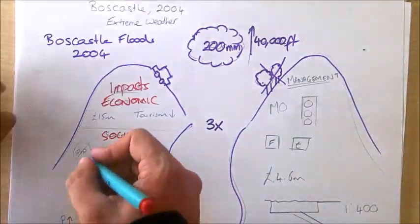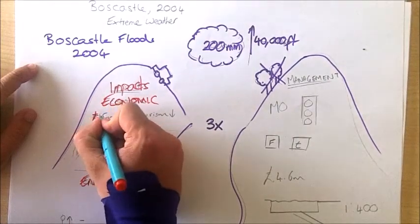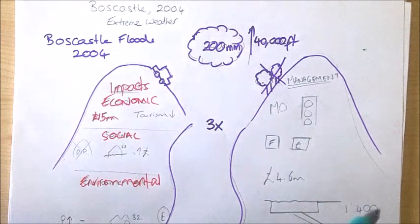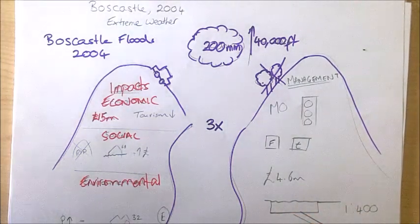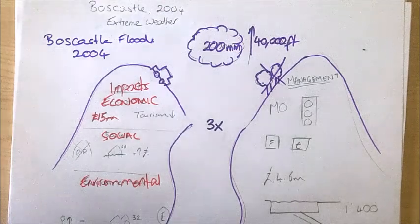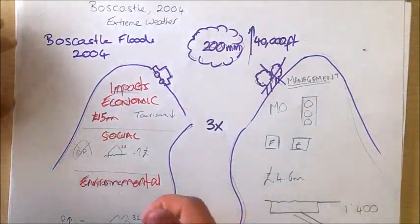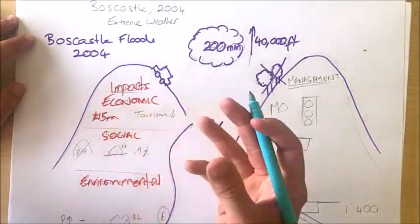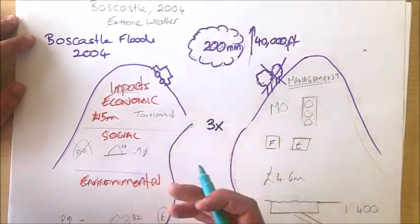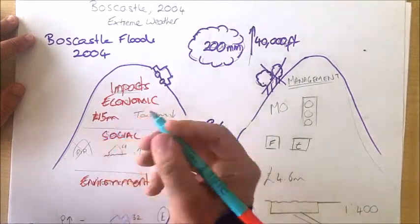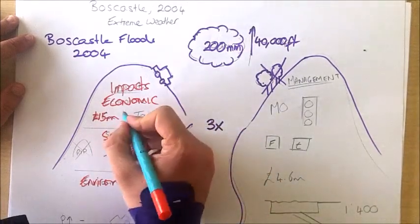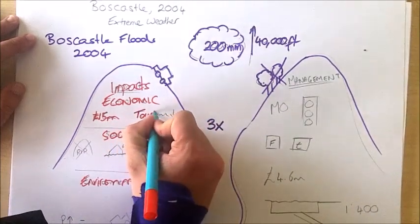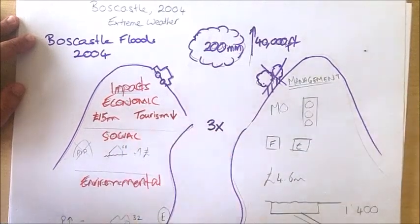Starting with the economic impacts, we saw an estimated total damage of around £15 million, predominantly caused by destruction to buildings and local businesses as the river rushed through the town of Boscastle and destroyed neighboring properties that were close to the river. Boscastle's major industry is tourism. It's a very attractive location on the seafront, and therefore, the destruction of most of its hotels, cafes, and other tourist businesses, and the reputation of the area was severely damaged, resulting in a huge decrease in tourism and financial gains from that.